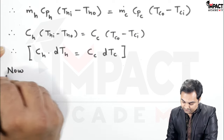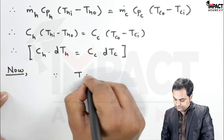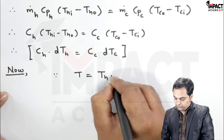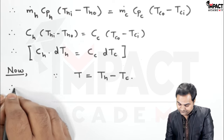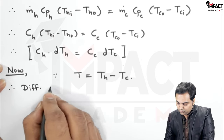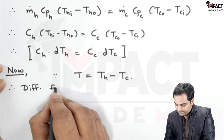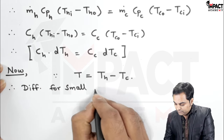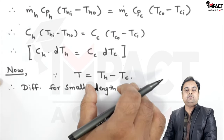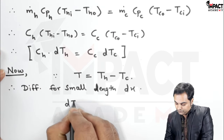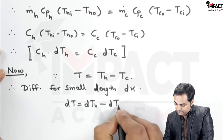The total temperature difference is the temperature difference of the hot fluid minus the temperature difference of the cold fluid. Differentiating for a small length DX, because this temperature difference is for the entire heat exchanger, for a small length it would be: dT equals DTH minus DTC.